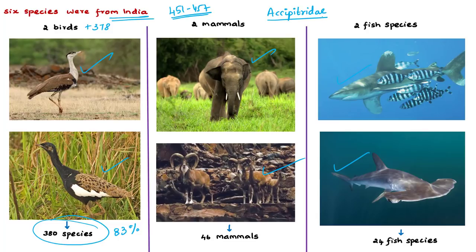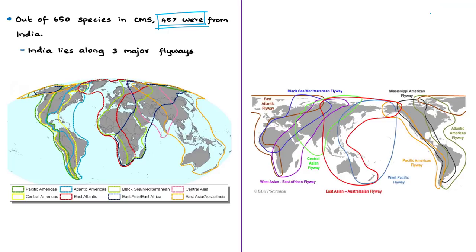About 41 species belonging to waders or shorebirds also migrate in large numbers, followed by duck species belonging to the family Anatidae. India is a temporary home to several migratory animals and birds because India lies in the core central region of the Central Asian Flyway, which covers areas between the Arctic Ocean and the Indian Ocean, and India also lies along the path of two other flyways.